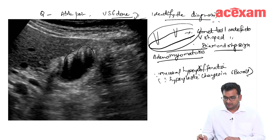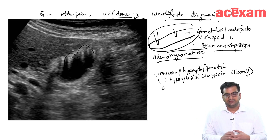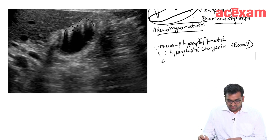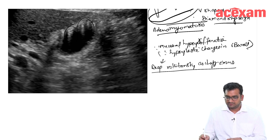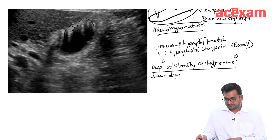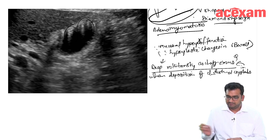The Rokitansky-Aschoff sinuses are very deep. Whenever there is deposition of cholesterol crystals in the deep Rokitansky-Aschoff sinuses, this kind of artifact is seen on ultrasound. When there is deposition of cholesterol crystals in the deep Rokitansky-Aschoff sinuses, it leads to such a picture.